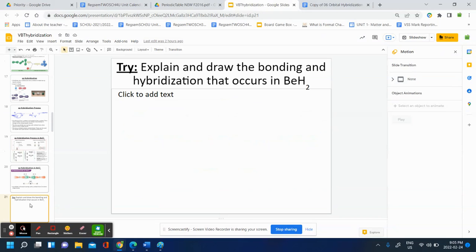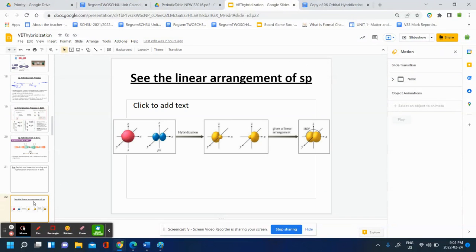And then you can do other examples, such as drawing BEH2 and showing its orbital representation. And again, here we can see the linear shape of the SP hybridization.